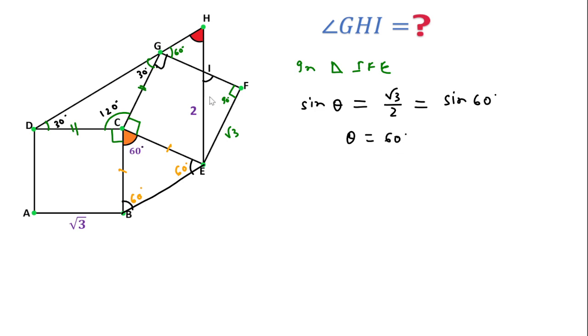If this angle is 60 degrees, then by vertically opposite angles we can say this angle is also 60 degrees.